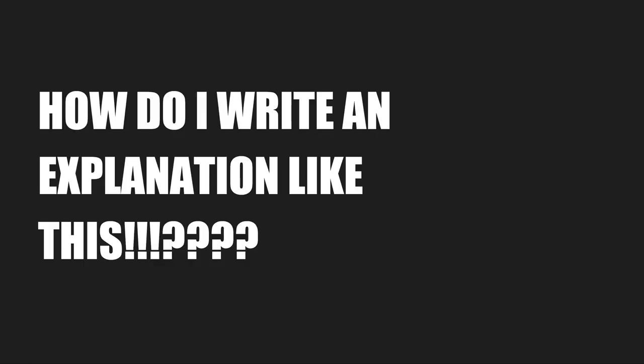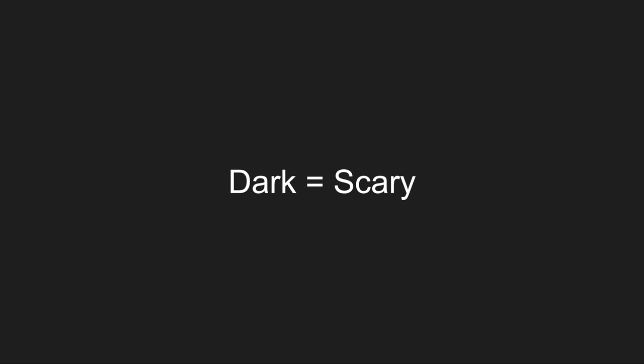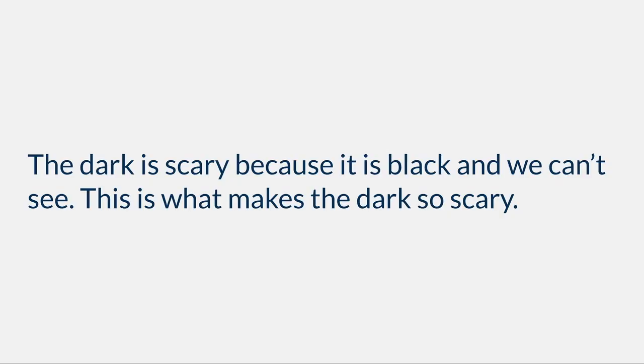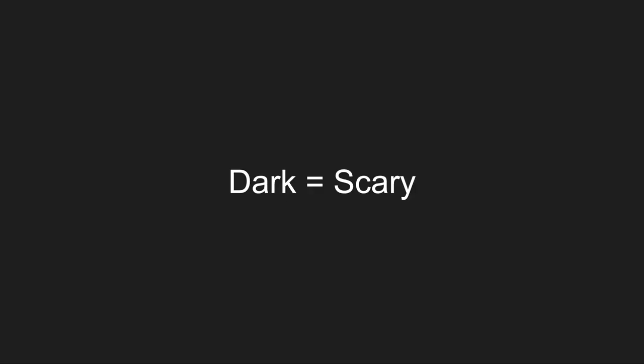But how do you write an explanation like this? I'm going to teach you how to think in a way that will lead to a good explanation. For an example, we're going to think about the word dark and how the word dark makes something scary. For somebody that thinks dark equals scary, they might come up with explanation sentences like: 'The dark is scary because it is black and we can't see. This is what makes the dark so scary.' But this is not a very good explanation — it's very shallow or superficial.